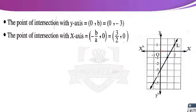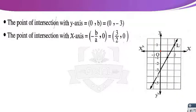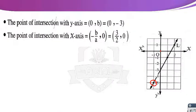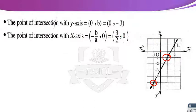Ordered pair number 1: (−1, −5) — x equals negative 1, y equals negative 5. Number 2: (1, −1) — x equals 1, y equals negative 1. Number 3: (2, 1) — x equals 2, y equals 1. These three ordered pairs all lie on the same straight line. The linear function is represented graphically by a straight line intersecting the Y-axis at the point (0, b).